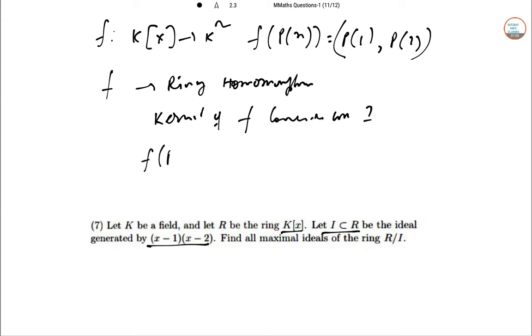F(P(x))=0 gives P(1)=P(2)=0, hence we can get P(x)=Q(x)(x-1)(x-2) where P belongs to I.